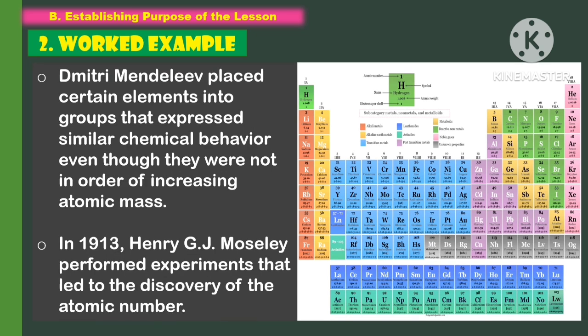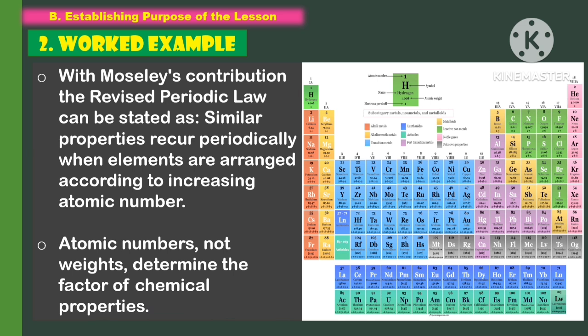Dimitri Mendeleev placed certain elements into groups that expressed similar chemical behavior even though they were not in order of increasing atomic mass. In 1913, Henry Moseley performed experiments that led to the discovery of the atomic number. With Moseley's contribution, the revised periodic law can be stated as: